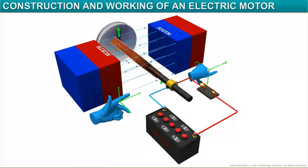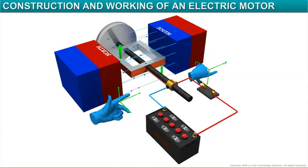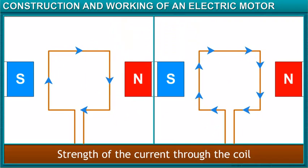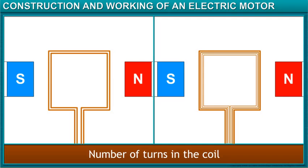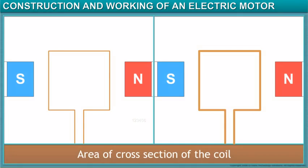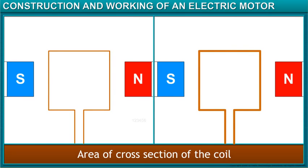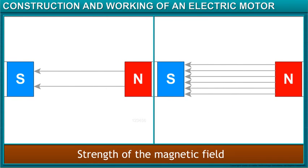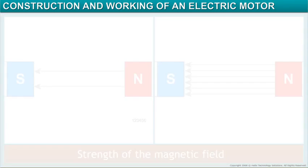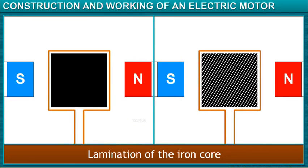The power of an electric motor depends on the strength of the current through the coil, the number of turns in the coil, the area of cross-section of the coil, the strength of the magnetic field, and the lamination of the iron core. This lamination reduces energy losses.